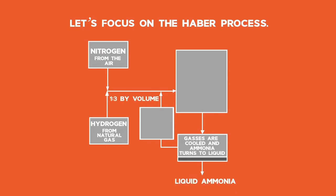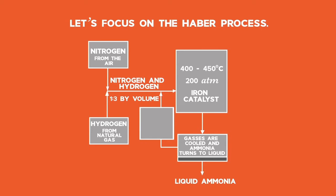To produce a maximum yield at minimum cost, pressure, temperature, and catalysts are used. The flowchart shows the overall picture of the ideal conditions used to produce ammonia. Note that with each pass of the gases through the reactor, only about 15% of the nitrogen and hydrogen converts to ammonia. The percentage can vary from plant to plant. By continual recycling of the unreacted nitrogen and hydrogen, the overall conversion is about 98%.